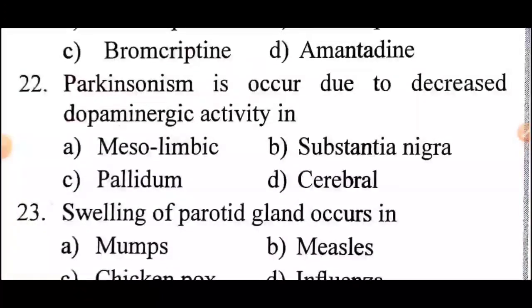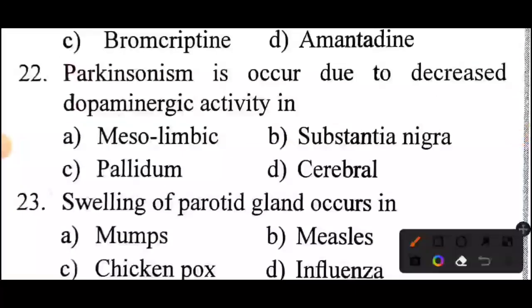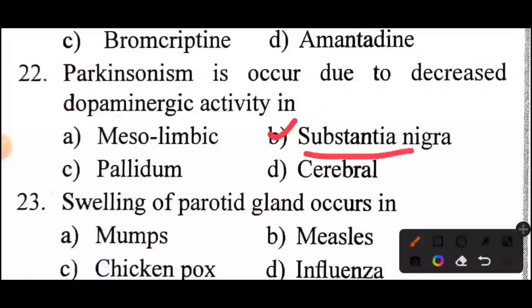Question: Parkinsonism occurs due to decreased dopaminergic activity in? Answer: option B, substantia nigra.